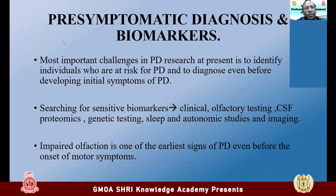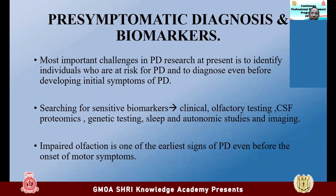The golden question is pre-symptomatic diagnosis and biomarkers. Before the first symptom appears, brain changes have already started. The most important challenge in Parkinson's disease research is to identify individuals at risk so that management can begin early to slow down the illness. They have tried many biomarkers — clinical biomarkers, olfactory testing, genetic testing, CSF biomarkers — but unfortunately no test has been validated so far. Impaired olfaction is one of the earliest signs, but nothing is validated yet.